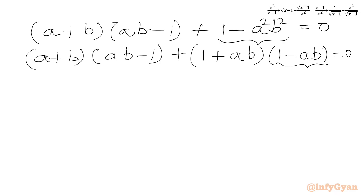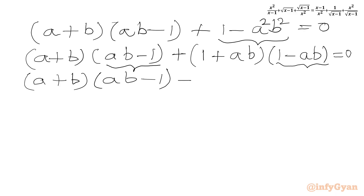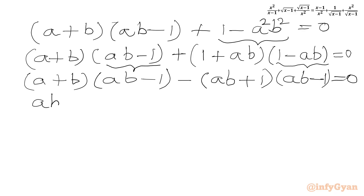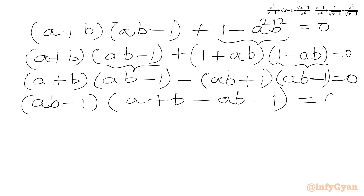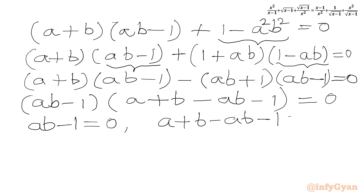Taking negative common from (1 − ab) to match (ab − 1): (a + b)(ab − 1) − (ab + 1)(ab − 1) = 0. Now we can take (ab − 1) common: (ab − 1)[(a + b) − (ab + 1)] = 0. Using the zero product rule, either ab − 1 = 0, or a + b − ab − 1 = 0.